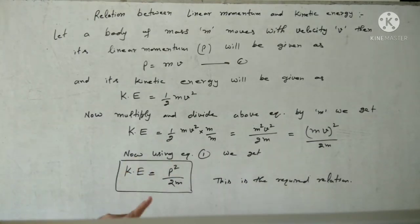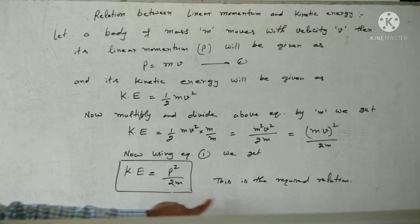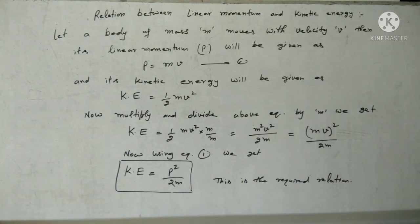Kinetic energy is equal to P square upon 2M. This is the equation between linear momentum and kinetic energy, which is utilized in many numerical problems.